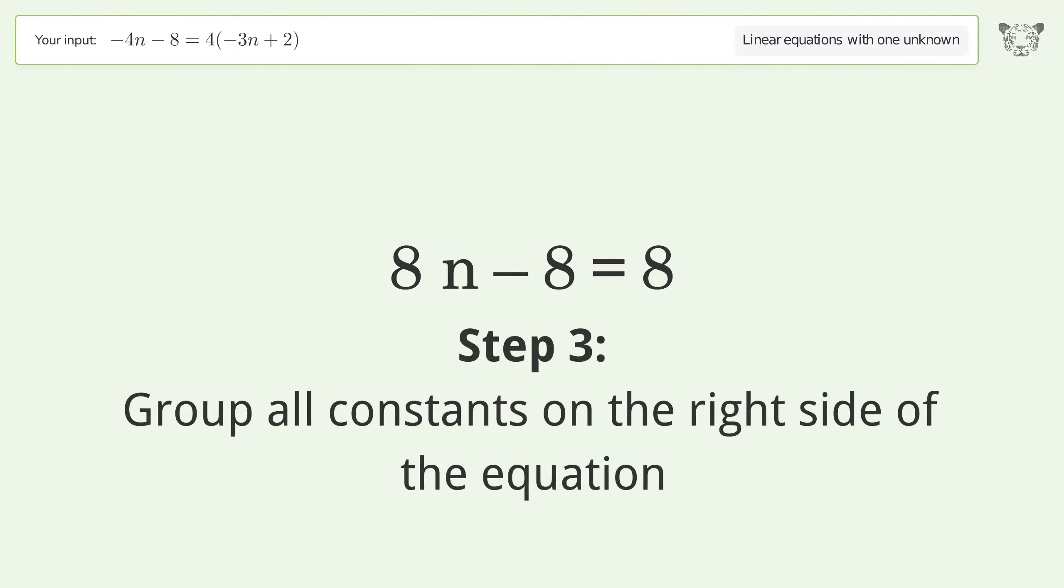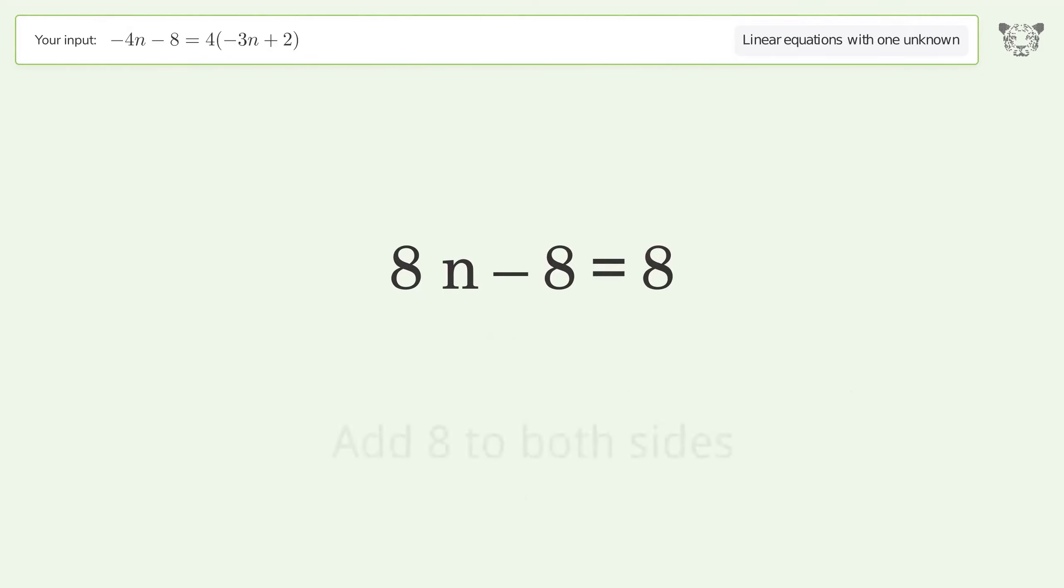Group all constants on the right side of the equation. Add 8 to both sides and simplify the arithmetic.